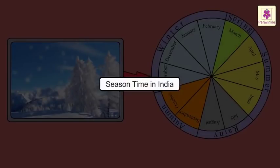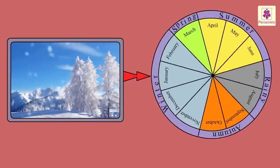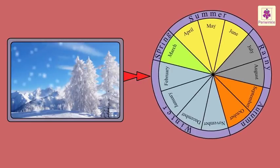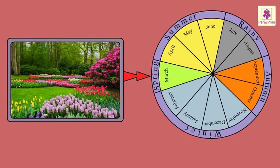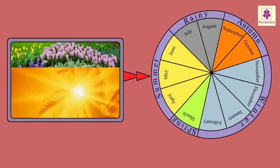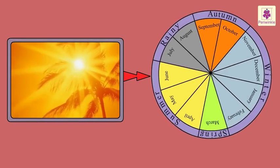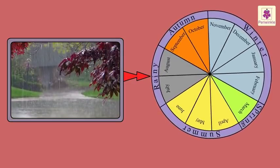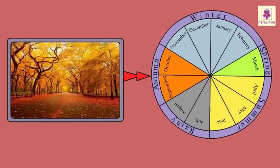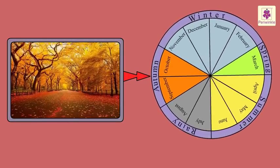Season time in India: Winter from November to February, Spring in March, Summer from April to June, Rainy season in July and August, Autumn in September and October.